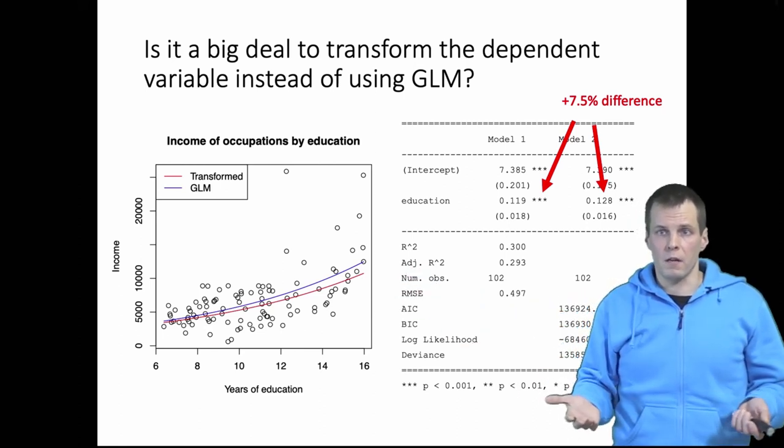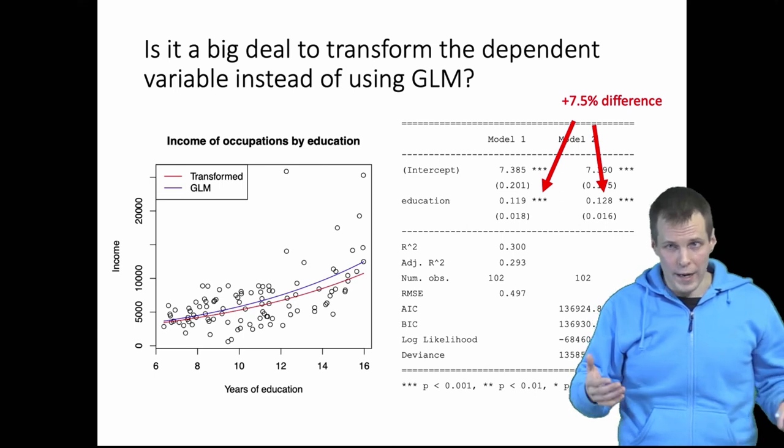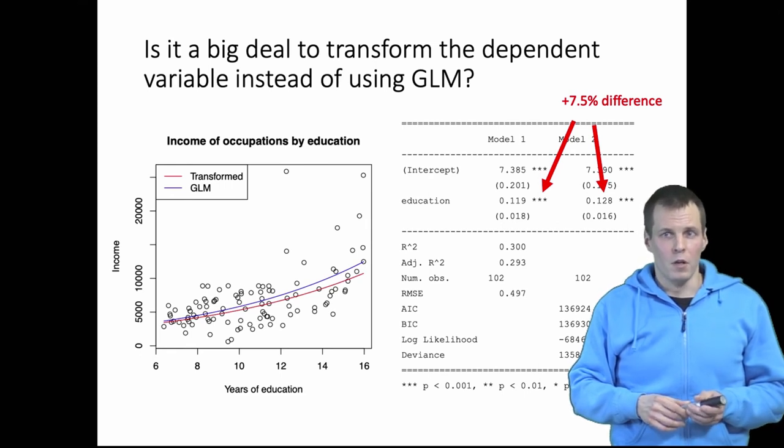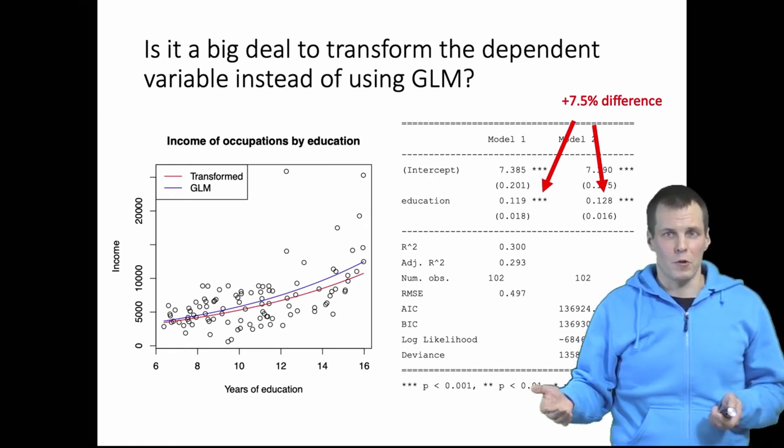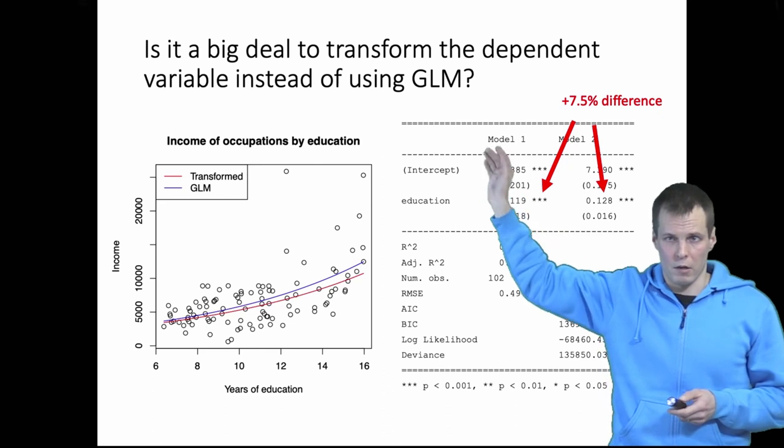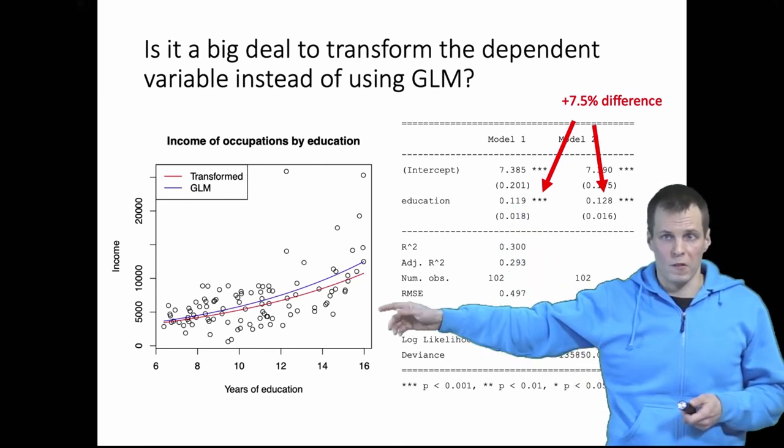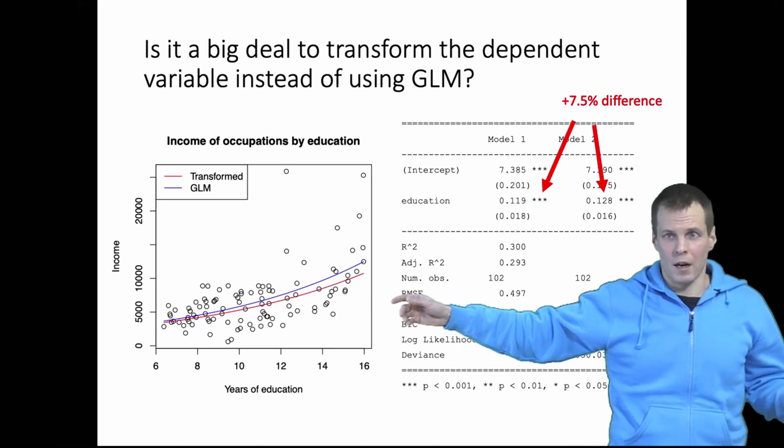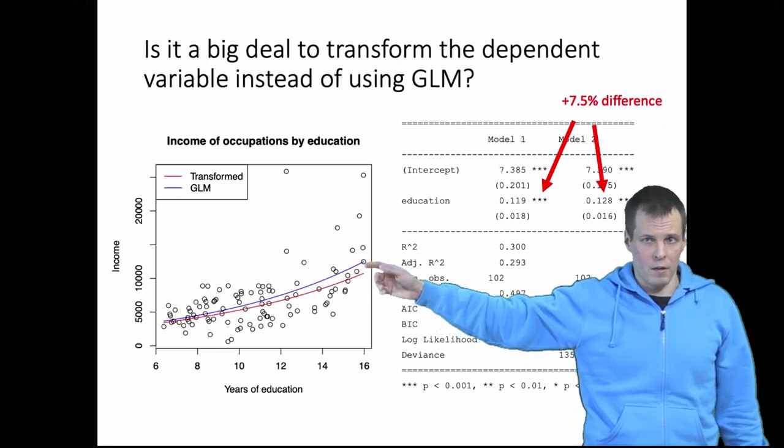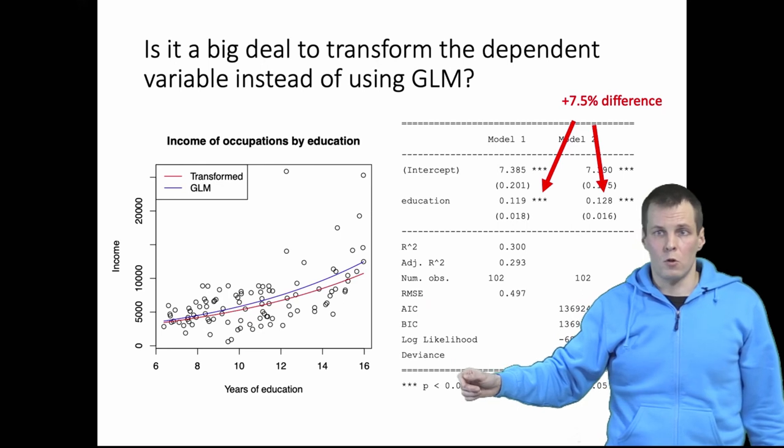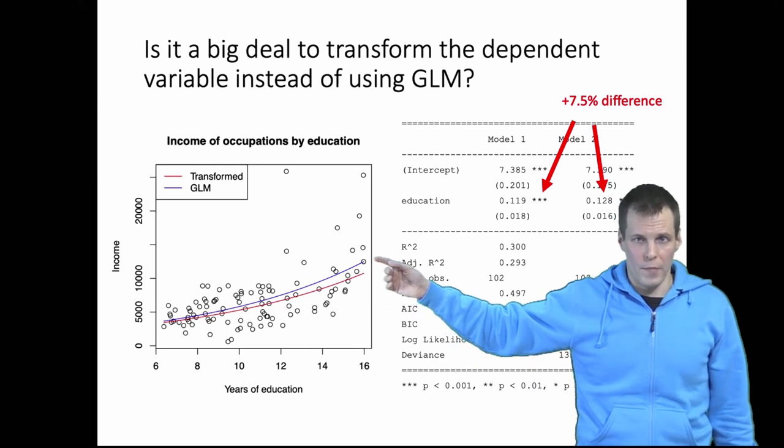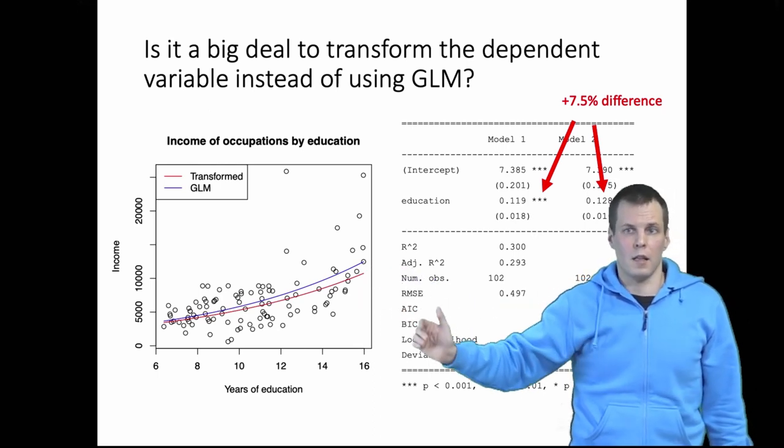Now the question is final question is that when I get papers to review where authors use a transformation on the dependent variable, should I recommend that those papers are rejected because they don't use the GLM approach or quasi maximum likelihood estimation of Poisson instead of the transformation of the dependent variable? No I would not say that this red line is worthless. I'm saying that the blue line is better and I would probably recommend that the authors take a look at some articles that I've cited here that explain why the blue line is better than the red line and then tell them to make an informed decision.